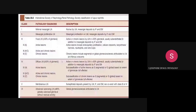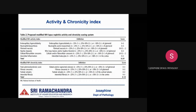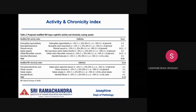The old ISN/RPS classification subclassified class 3 and 4 as active, chronic, or combined — this is no longer used. We have replaced it with the activity and chronicity index applicable to all classes, providing semi-quantitative assessment of active and chronic injury to monitor treatment response and disease progression. Activity features include endocapillary hypercellularity, neutrophils and karyorrhexis, fibrinoid necrosis, hyaline deposits, cellular or fibrocellular crescents, and interstitial inflammation — fibrinoid necrosis and crescents are multiplied by 2, giving a total score out of 24. Chronicity lesions include glomerulosclerosis, fibrous crescents, tubular atrophy, and interstitial fibrosis, graded out of 12.